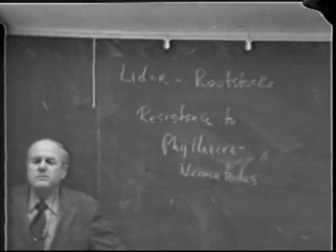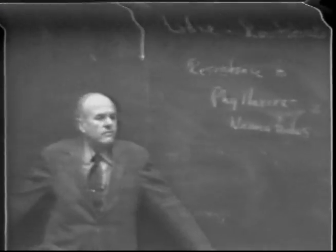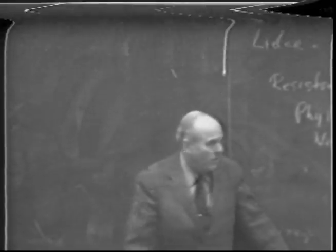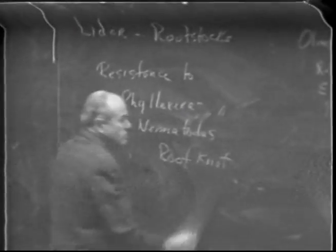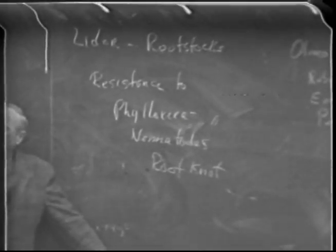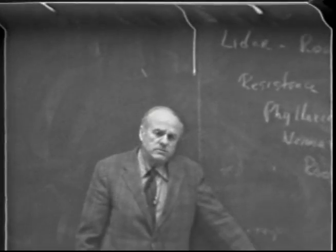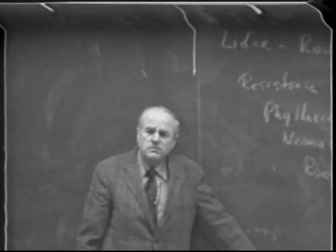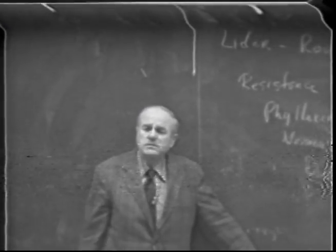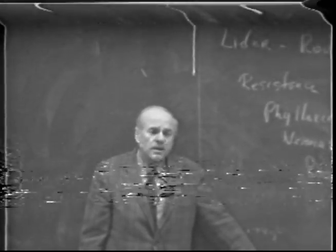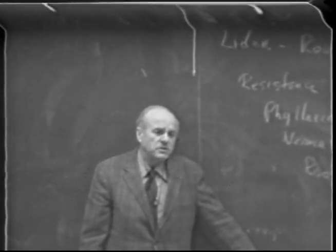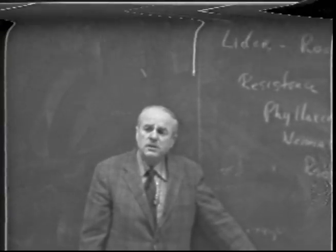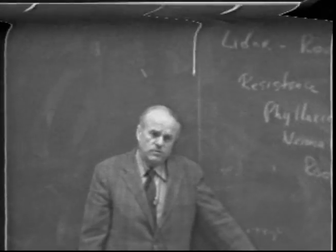Now, fifteen to twenty years ago when we spoke of resistance to nematodes, we were only thinking of one type: the root knot. That's the one that formed a little round ball on your roots, very similar to sugar beet nematodes or the nematodes that infect tomatoes. They formed these big round galls. These root knot nematodes have been the most commonly known for the past years, and we've had a few rootstocks resistant to them.